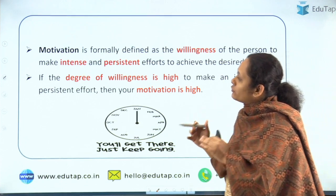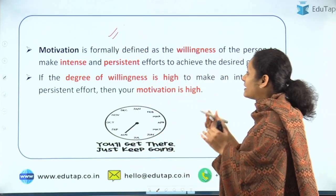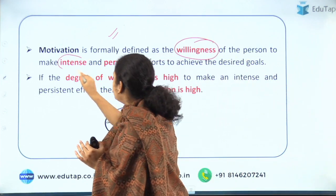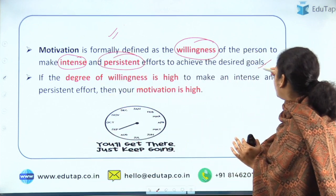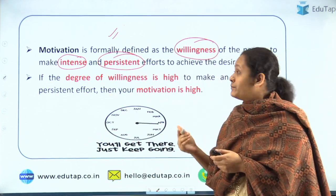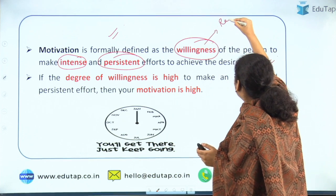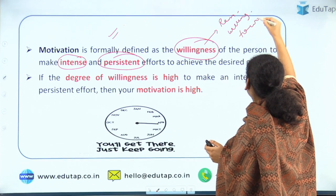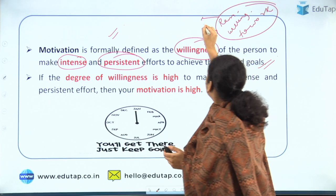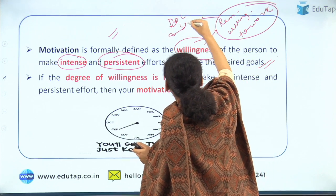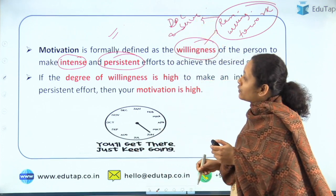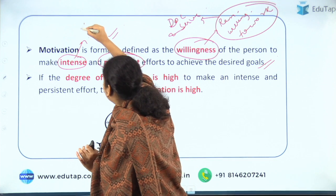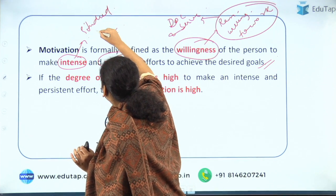The formal definition of motivation is: motivation is the willingness of a person to make intense and persistent efforts so as to achieve their desired goal. In the previous example, Ram was willing to work hard because he knew he wanted to become a doctor and serve the society. In order to become a doctor, he made intense efforts — he studied hard for 18 hours.